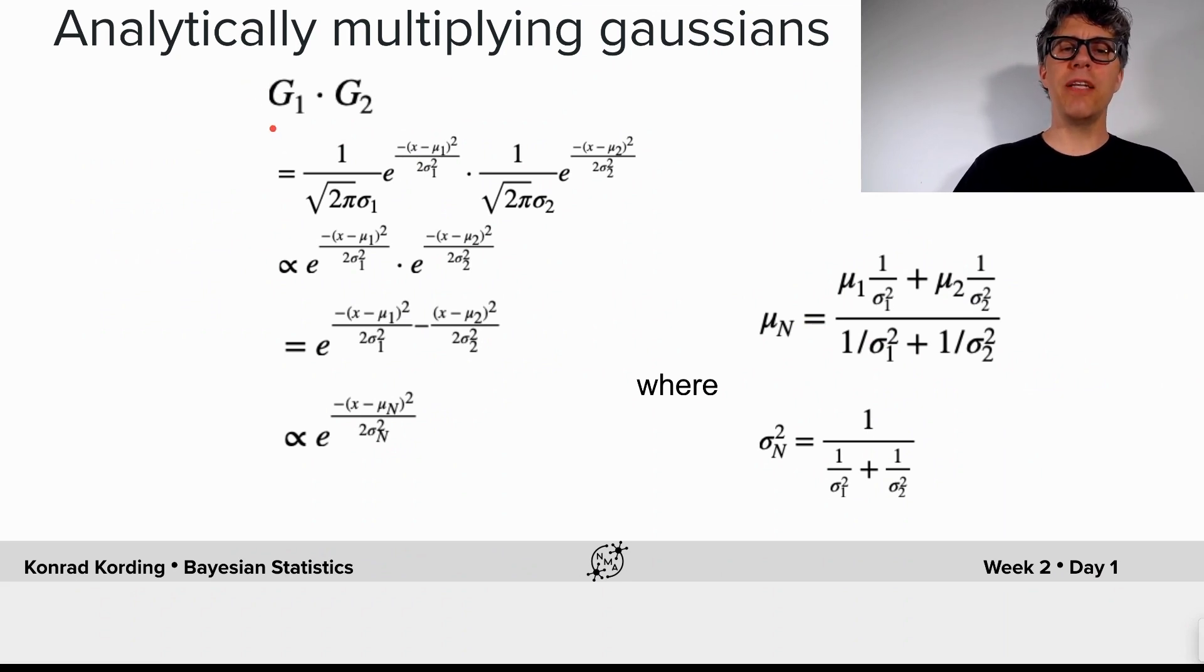We want to multiply two Gaussians, g1 and g2. We can fill in the equations for those two Gaussians here.